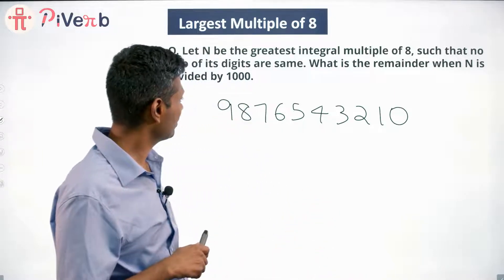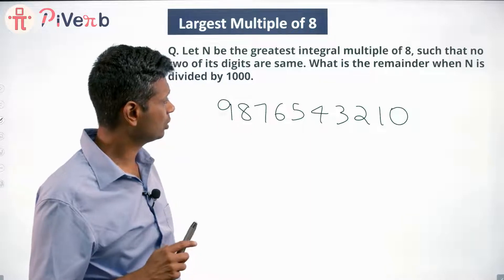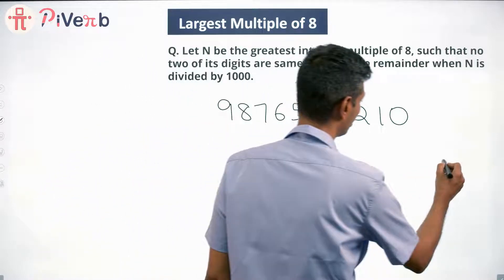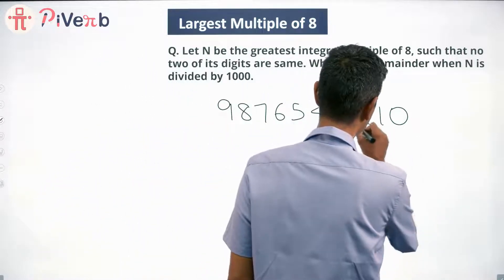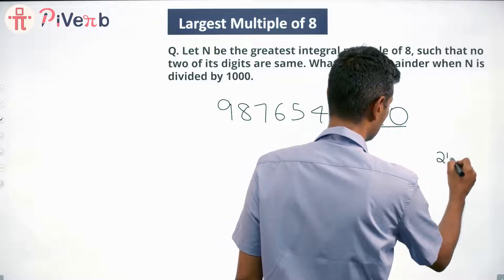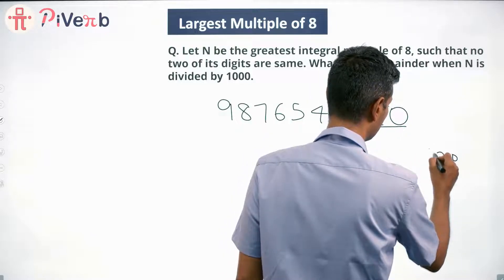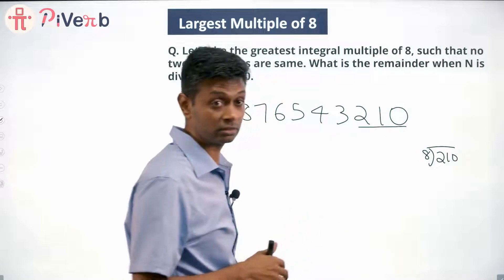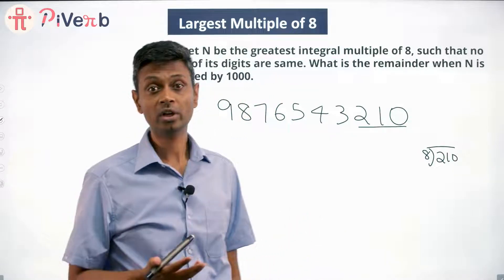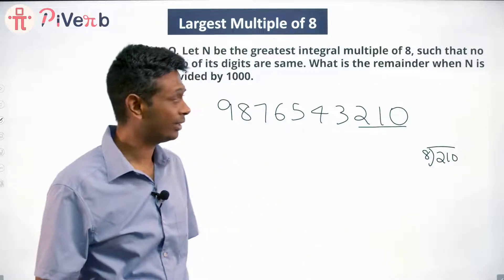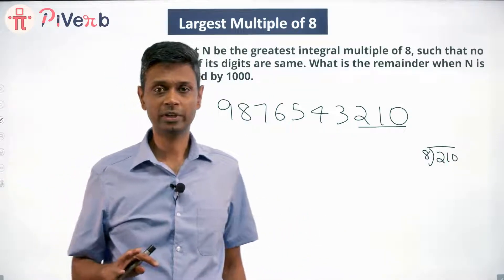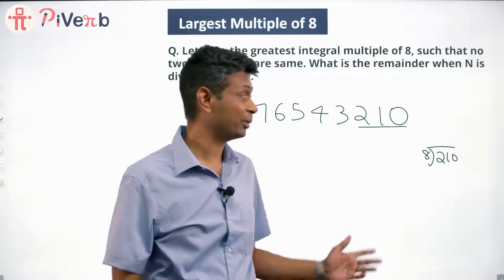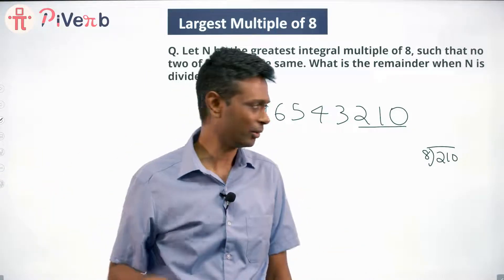The number is 9876543210. To check whether this is a multiple of 8, we take the last three digits — the test of divisibility. 210 divided by 8: 200 is a multiple of 8 (200 = 25 × 8), so 210 is not a multiple of 8. This number doesn't work. So close — if this number had worked, we'd just write down the answer. Now we have to tweak it.